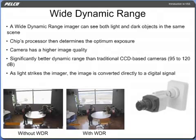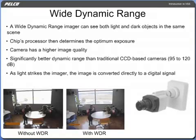The wide dynamic range imager can see both light and dark objects in the same scene. The chip's processor then determines the optimum exposure, pixel by pixel, essentially acting like more than 350,000 individual cameras. The result is a higher image quality and a significantly better dynamic range than traditional CCD-based cameras, 95 to 120 decibels.